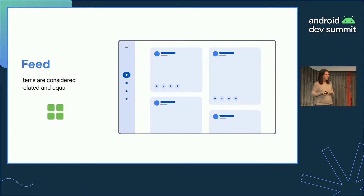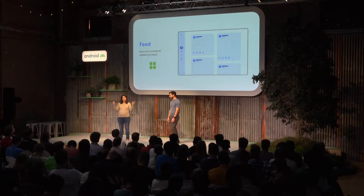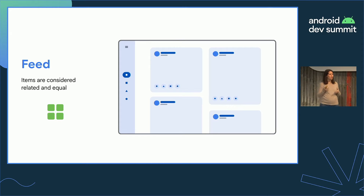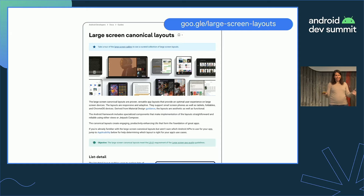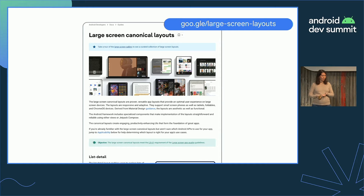The third canonical layout is feed. This comes up when you have different items that are all siblings — all similar things at the same level of the information hierarchy. Think of a news app with different articles: when there's little space you do one column, but when there's more space you can show them side by side. We just announced a new guide on developer.android.com covering all three layouts and how to implement them in both Views and Compose.